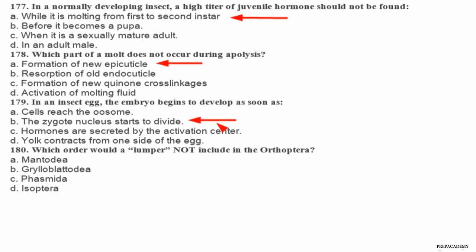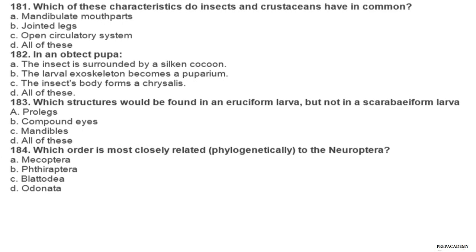Question 180. Which order would a lumper not include in the Orthoptera? A Mantodea, B Grylloblattodea, C Phasmida, D Isoptera. Question 181. Which of these characteristics do insects and crustaceans have in common? A mandibulate mouth parts, B jointed legs, C open circulatory system, D all of these. Question 182. In an obtect pupa: A the insect is surrounded by a silken cocoon, B the larval exoskeleton becomes a puparium, C the insect's body forms a chrysalis, D all of these. Question 183. Which structures would be found in an eruciform larva but not in a scarabaeiform larva? A prolegs, B compound eyes, C mandibles, D all of these.